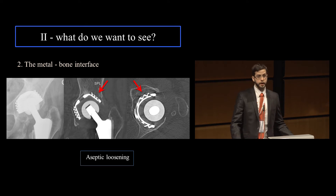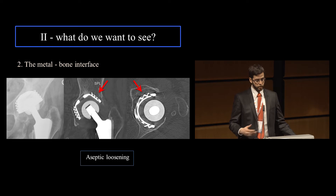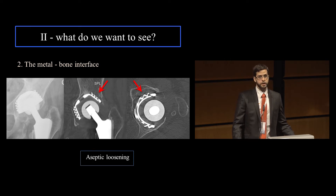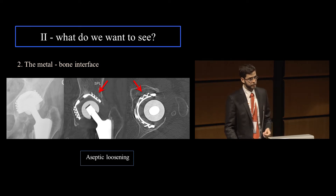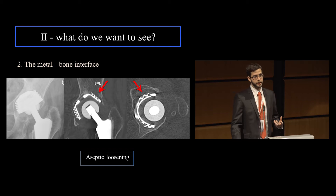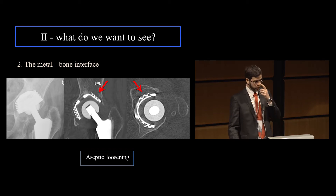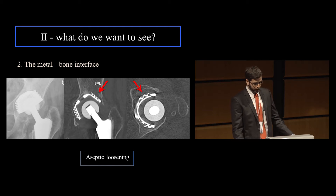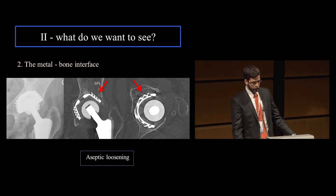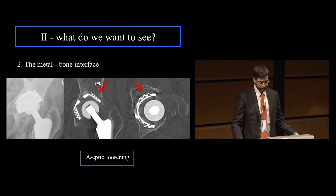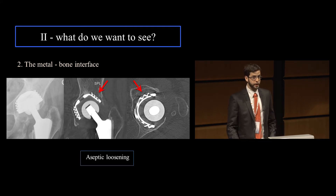Obviously we have to look at the interface between the metal and the bone, and sometimes the cement and the bone, because lucencies in this area — lytic lesions — are related to aseptic loosening, which is a very frequent complication. In this case, you can see that around the acetabular component there is a lytic lesion, which you can appreciate on the axial image as well, and this is aseptic loosening.